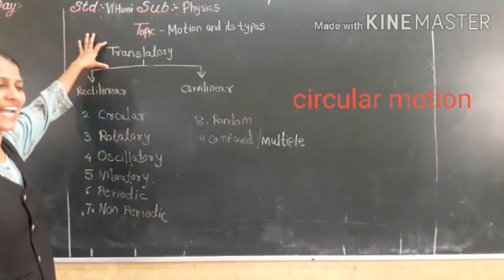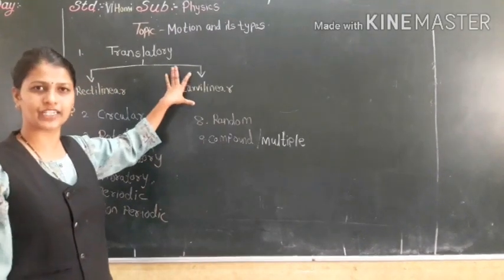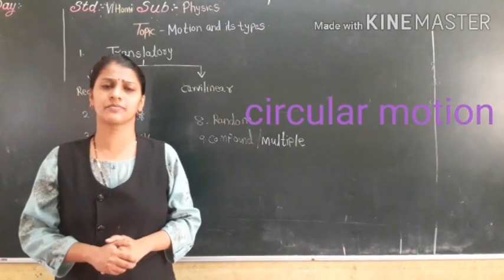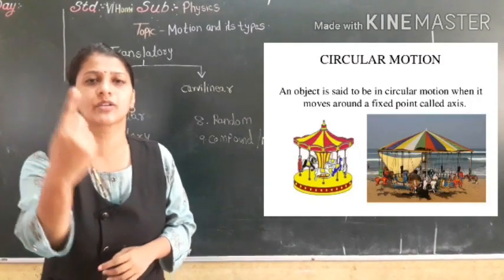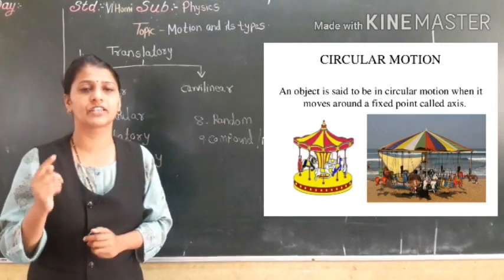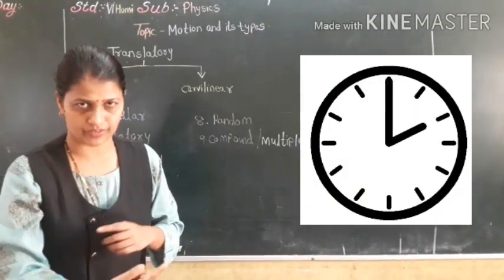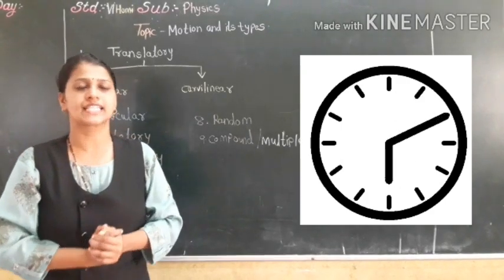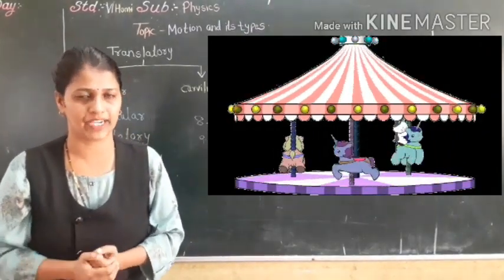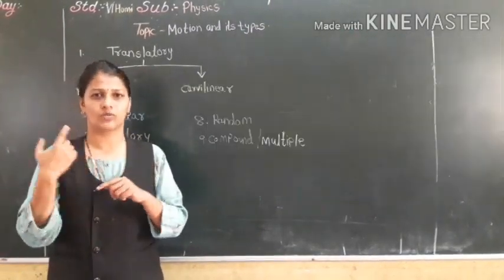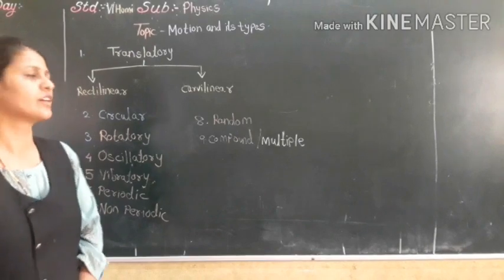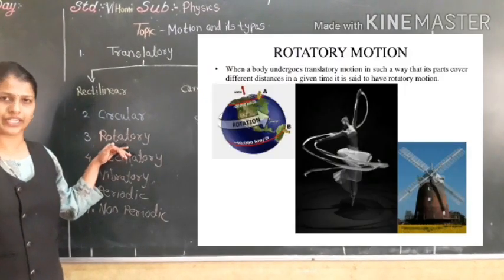Next is circular motion. Circular motion is when the object moves in a circular path. For example, the hands of a clock move in a circular path. Also the merry-go-round in a garden moves in a circular path. That motion is called circular motion.